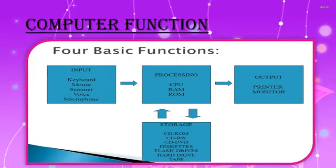Computer Functions. In the previous slide I explained that there are 3 basic computer functions, but our Processing Device has 2 functions, that's why we count 4 basic functions. The first is Input — through Keyboard, Mouse, Scanner, Voice and Microphone we insert our data into the computer, then the data is ready to go to Processing. Processing happens through the CPU, which is also called the Brain of the Computer, along with RAM and ROM, which both help in processing.